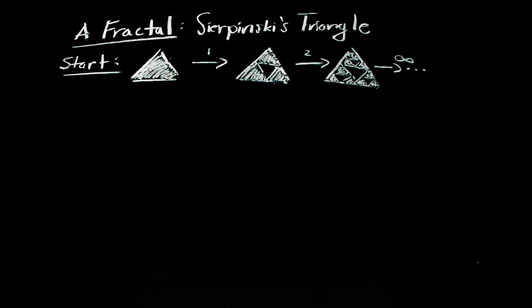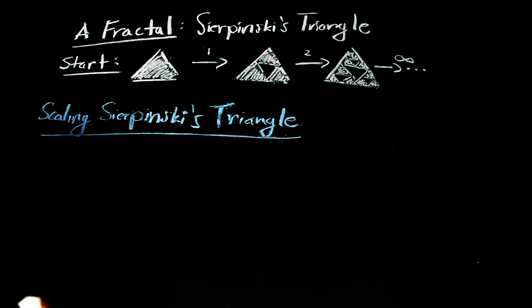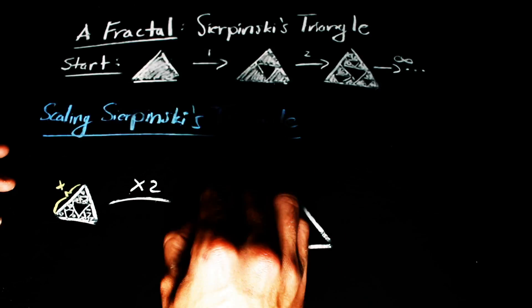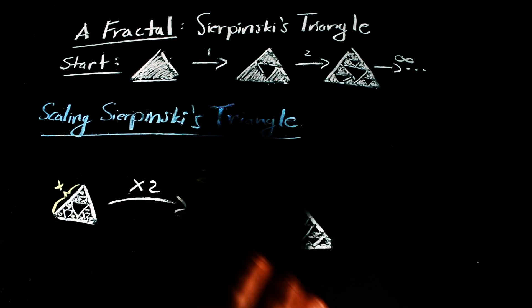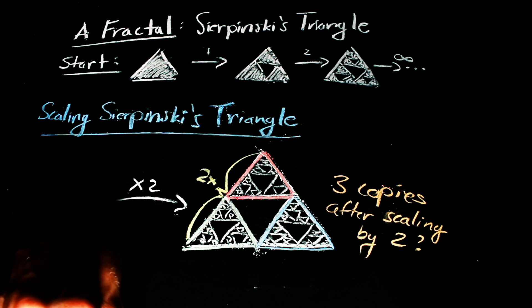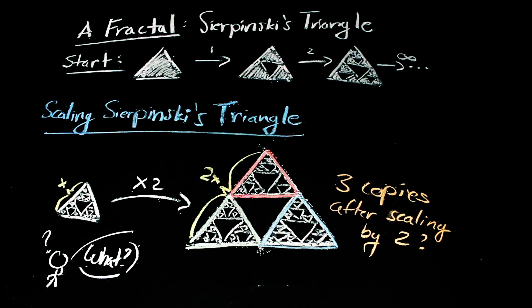And what you get when you're done with doing that infinitely many times, that's Sierpinski's Triangle. When you scale this triangle by a factor of two, you get three copies of it. So what's its dimension?